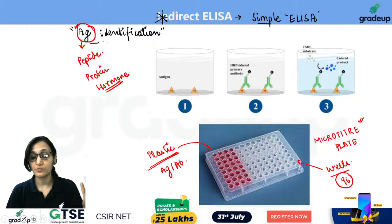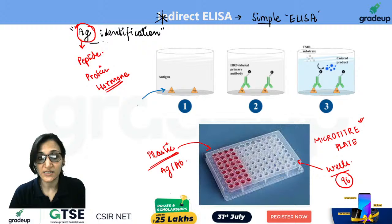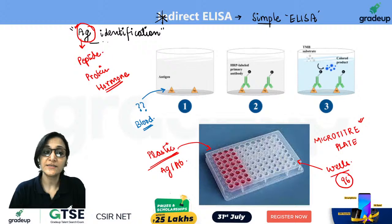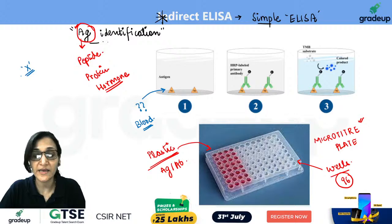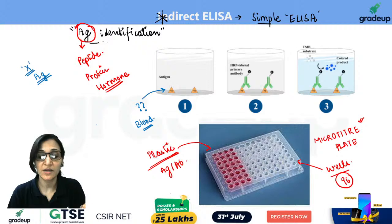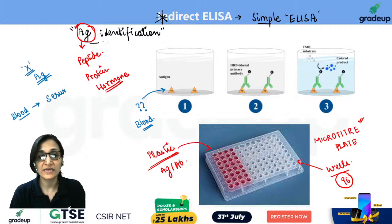In the 96-well plate, there is an option for positive and negative controls. The antigen comes from the blood of the patient. If a doctor suspects a disease in a patient and a particular pathogen is multiplying in the body, when blood is taken, the pathogen will be present. That pathogen is what we call antigen. Blood will be taken from the patient, serum will be prepared from it, and that serum will contain the antigen.